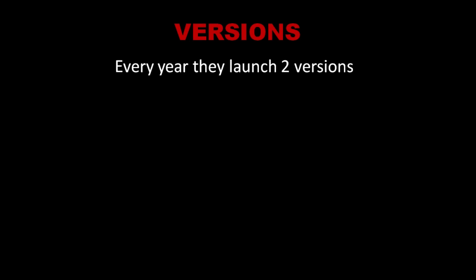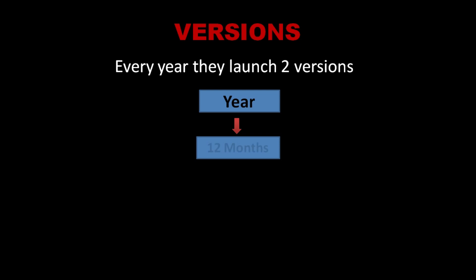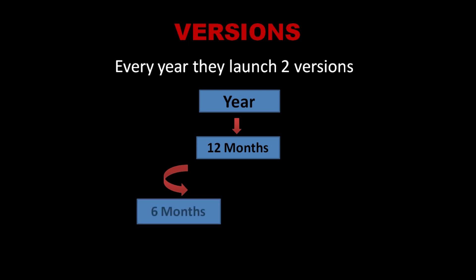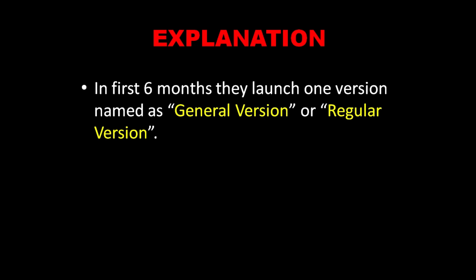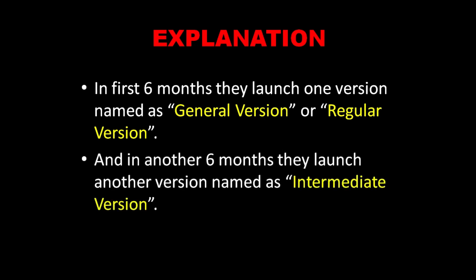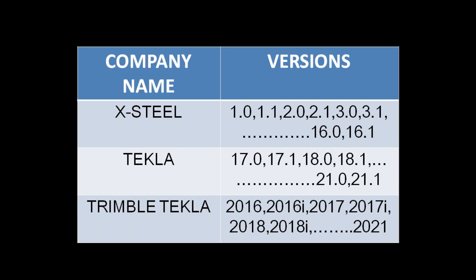For every software there will be versions, and most software launches only one version per year. But for Tekla, they launch two versions in one year. A year has 12 months, so dividing into two equal parts gives 6 months each. They launch one version in the first 6 months — January to June — called the general or regular version, and another in the next 6 months — July to December — called the intermediate version.